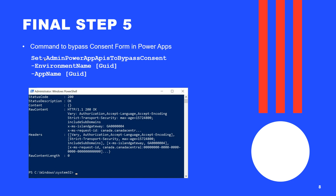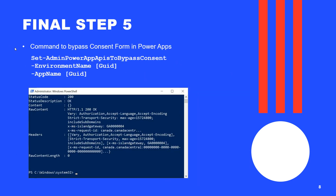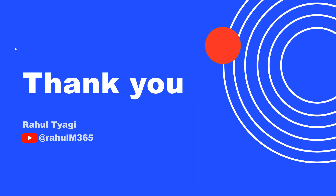If the command ran successfully, the status code will be 200 OK. This means the bypass policy has been applied, and the next time any new user opens this Power App, they will not be prompted with the consent pop-up. Thank you for watching this video — if you liked it, please like, share, and subscribe.